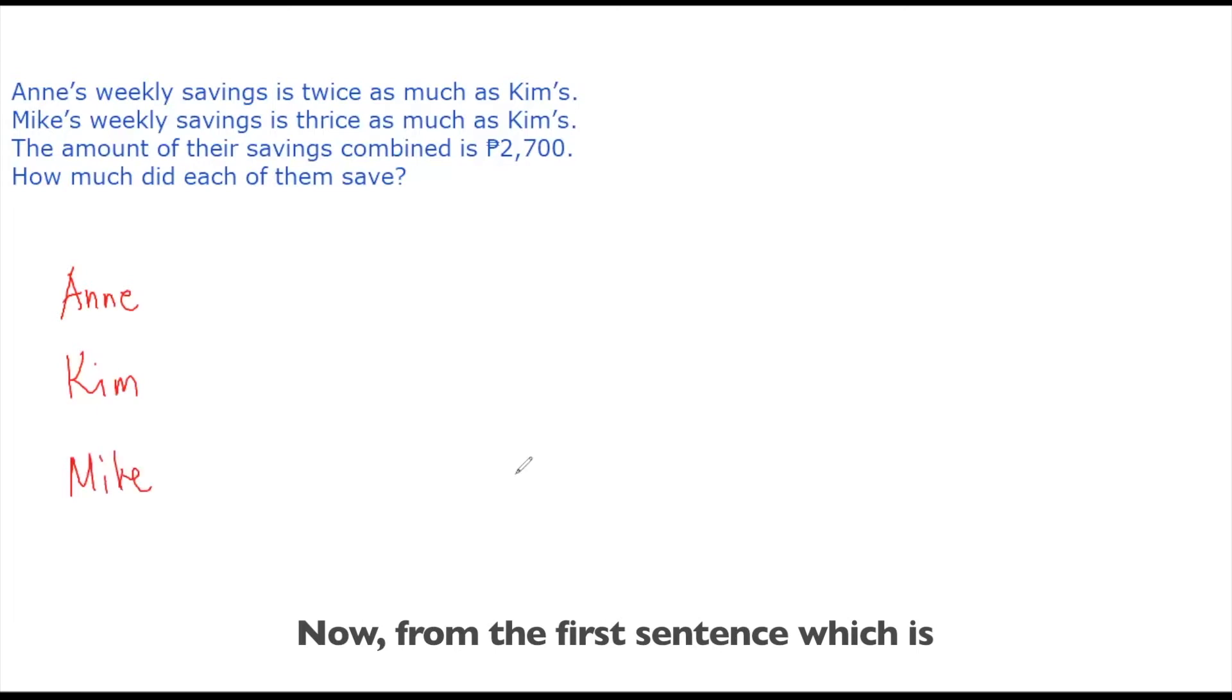Now from the first sentence which is Ann's weekly savings is twice as much as Kim's. So kinokompare natin ang savings of Ann and Kim. In the sentence it says that Ann's savings is twice as much as Kim. So for Kim's savings we can use one block. And then for Ann's savings, since it says that Ann's savings is twice, we can use two blocks to represent Ann's weekly savings.